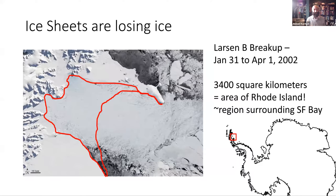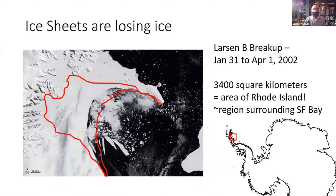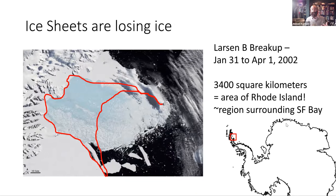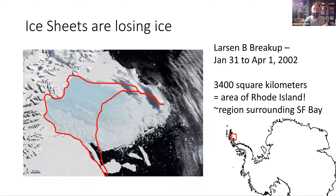Up through the 90s, dominant scientific thought was that ice responded very slowly to changes in the atmosphere, the climate, the oceans — but we've since seen that things can happen extremely quickly, like when the Larsen Ice Shelf collapsed over just two months in 2002. It had been sitting there — the Larsen Ice Shelf — about 10,000 years of relative stability, forming its own ecosystems. Then after a few decades of warming, it just took two months to disintegrate an area the size of Rhode Island, or around the San Francisco Bay. That ice was floating, though — the ice you see kind of collapsing and re-collapsing.